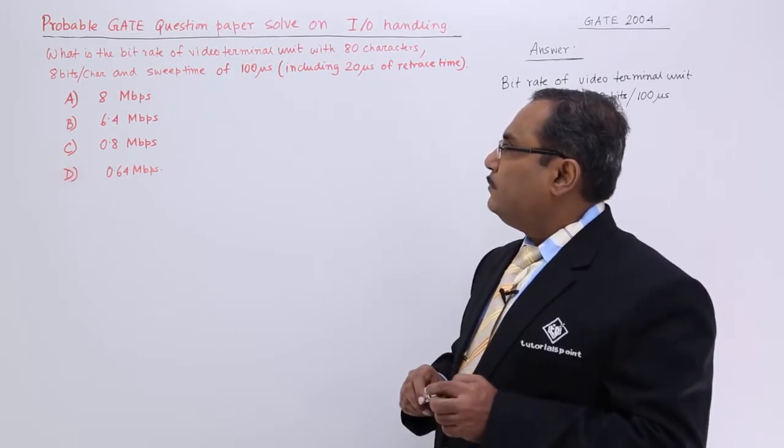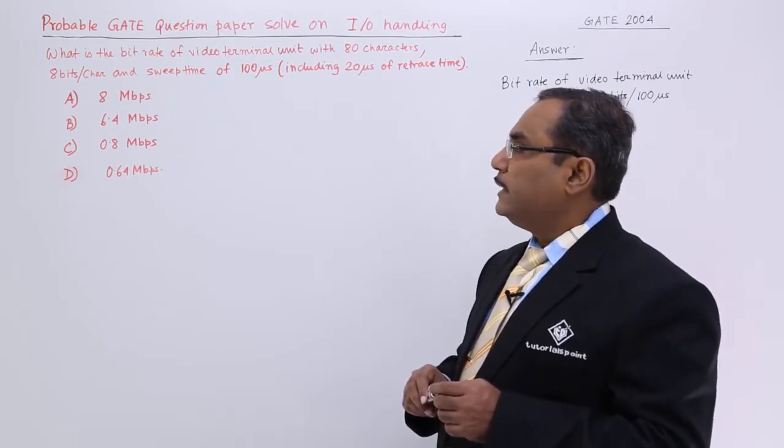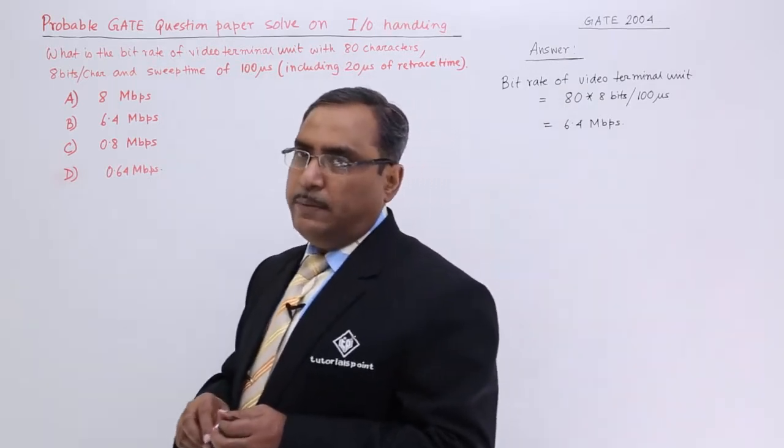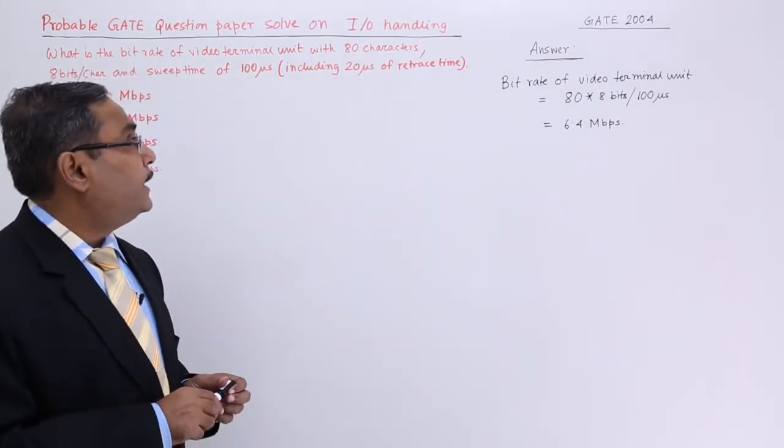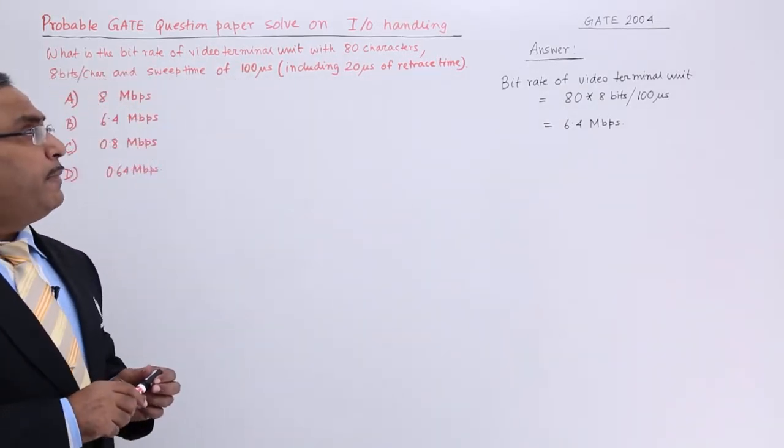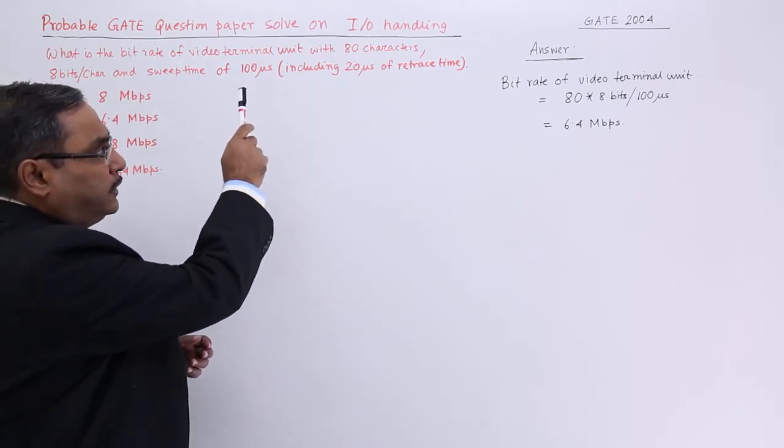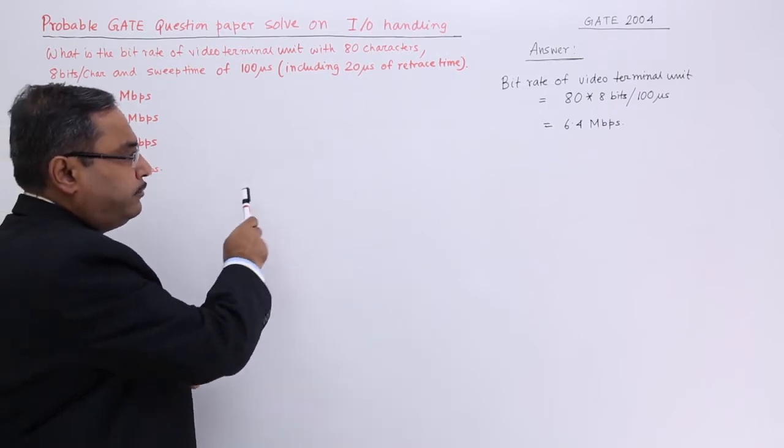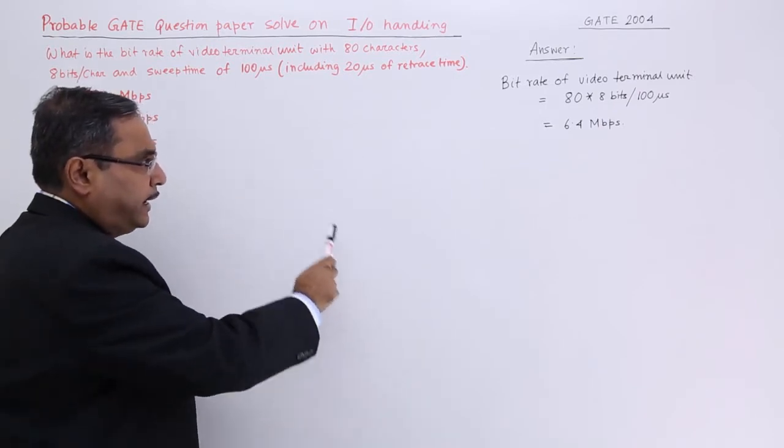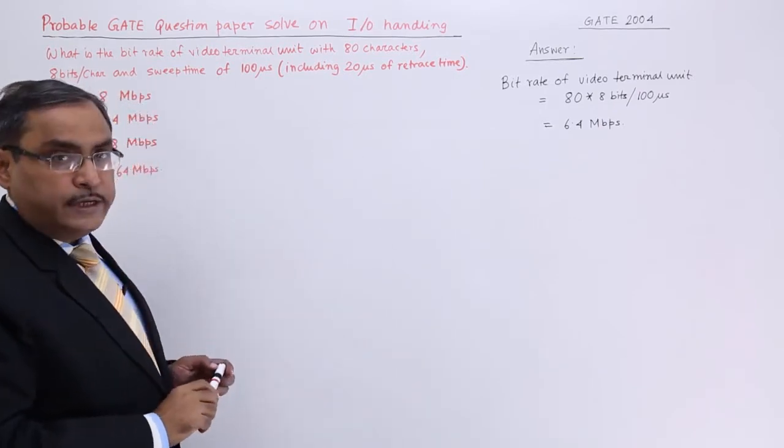And the swipe time of 100 microsecond. That is the swipe time they have given as 100 microsecond including 20 microsecond of retrace time. You know that on the screen the corresponding ray will get retraced and in this way the characters will be coming on the screen for the display.